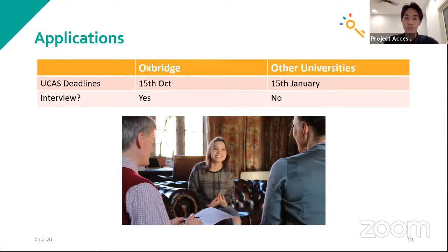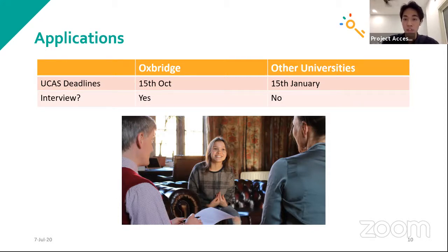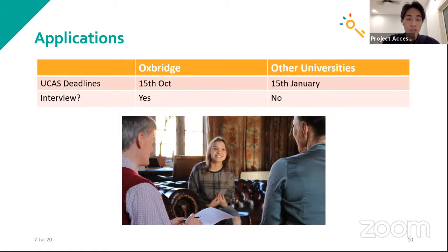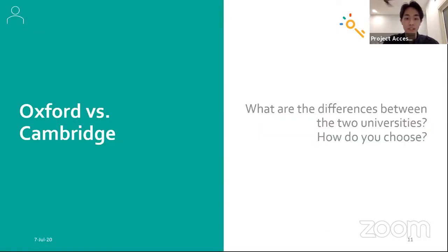Regarding applications: the UK deadline for Oxbridge is much earlier, taking place on 15th October, whereas for other universities the deadline is 15th January. So you're going to have a few more months to complete your UCAS if you need that time. At Oxbridge, you're also going to have to do an interview, which for some people can make the application process a lot more strenuous and stressful. You're not going to find interviews at any other universities.